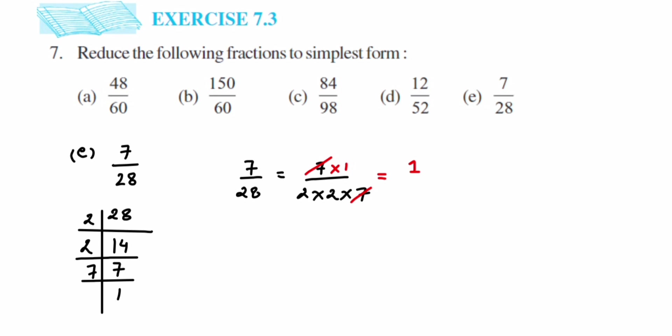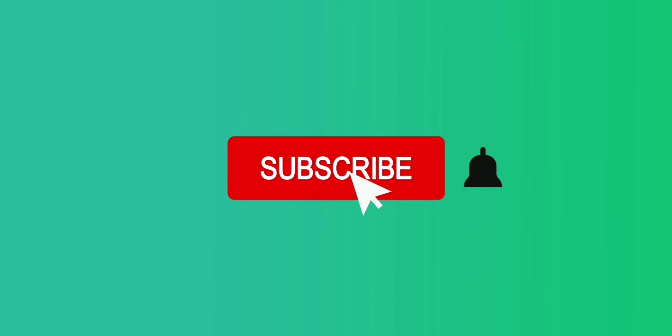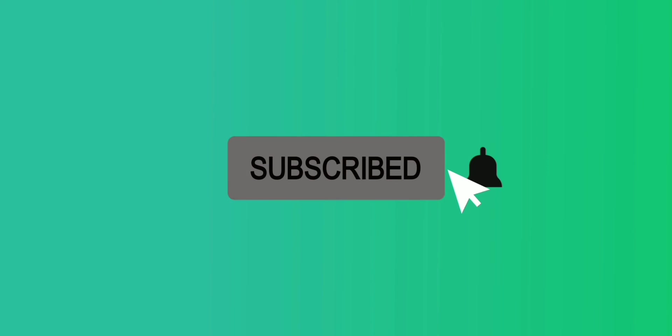Remember: when we cancel the 7, a 1 is left — not 0. If it were 0, then 7 × 0 would be 0, which is wrong. When cancelling, the number becomes 1. So the answer is 1/4. That's it! I hope it's clear. If you have any questions or doubts, you can drop a comment below. Thank you so much for watching.